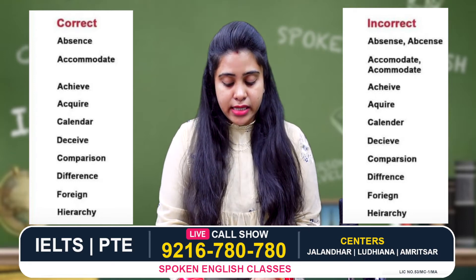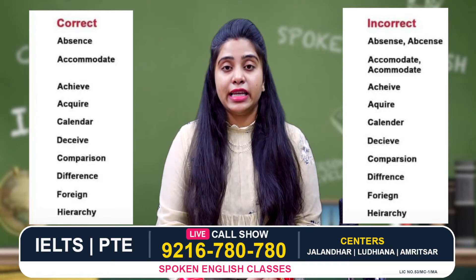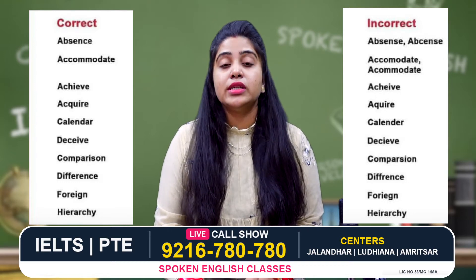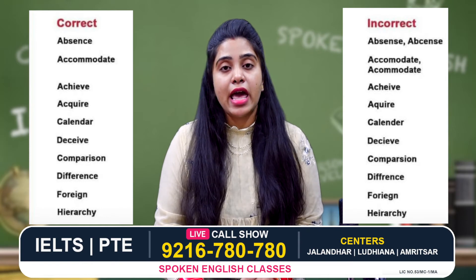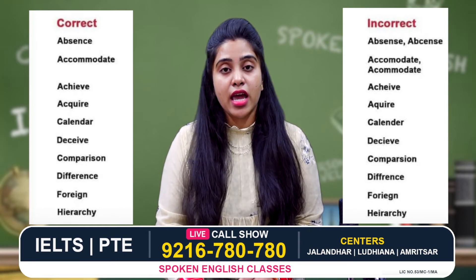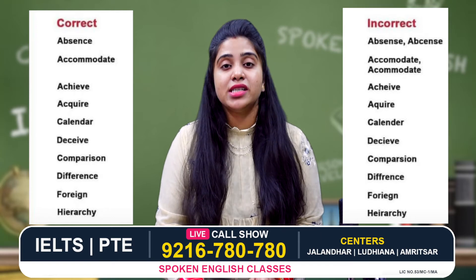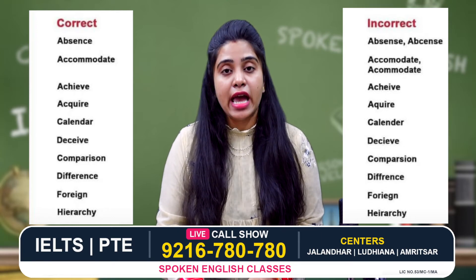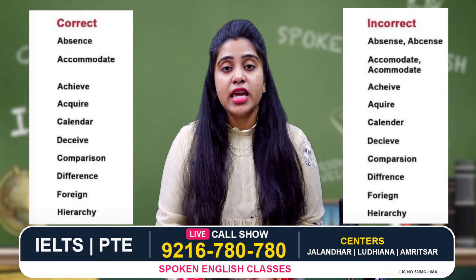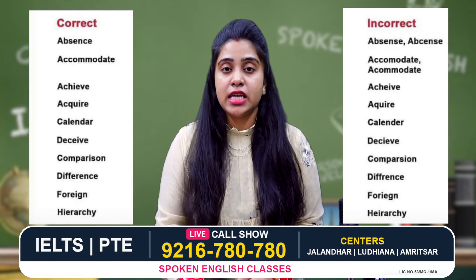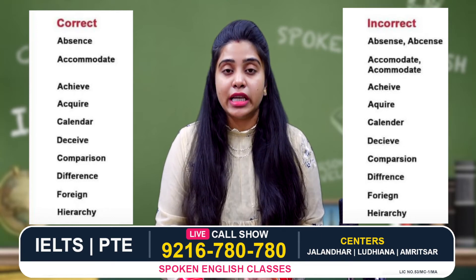The next word is 'calendar', with the correct spelling c, a, l, e, n, d, a, r. Students often use c, a, l, e, n, d, e, r — which is wrong.